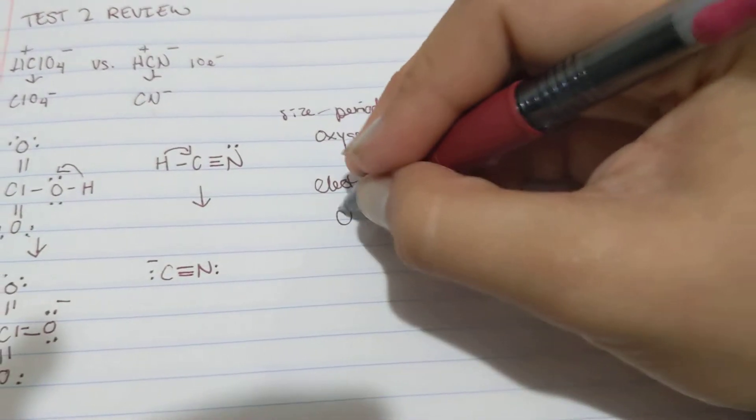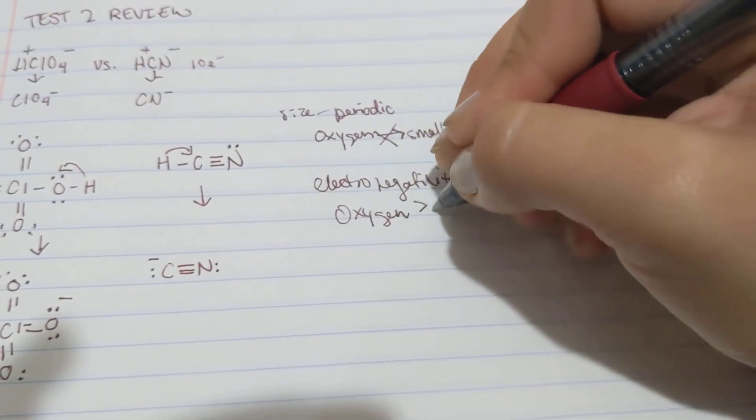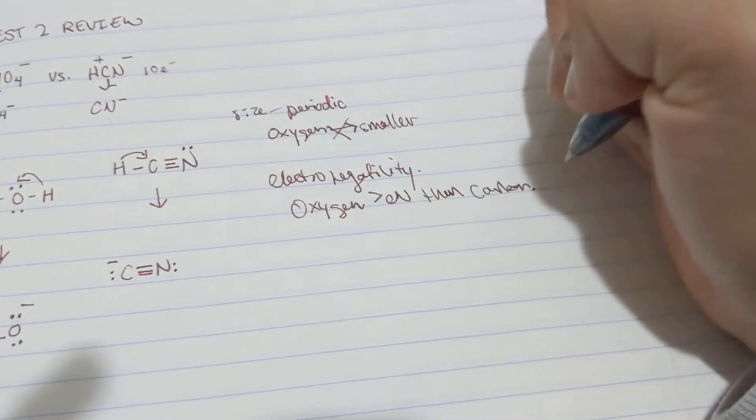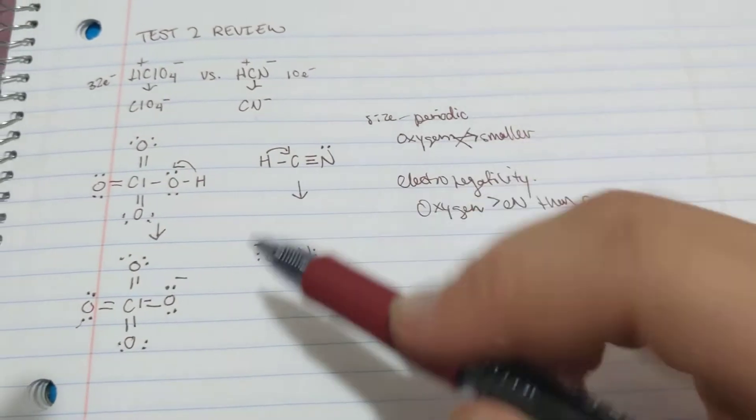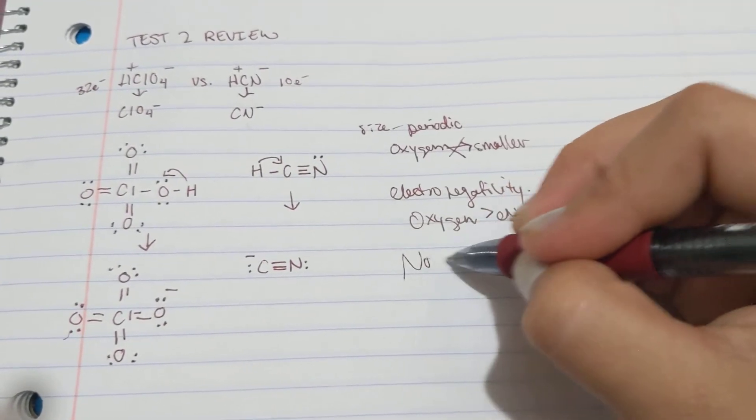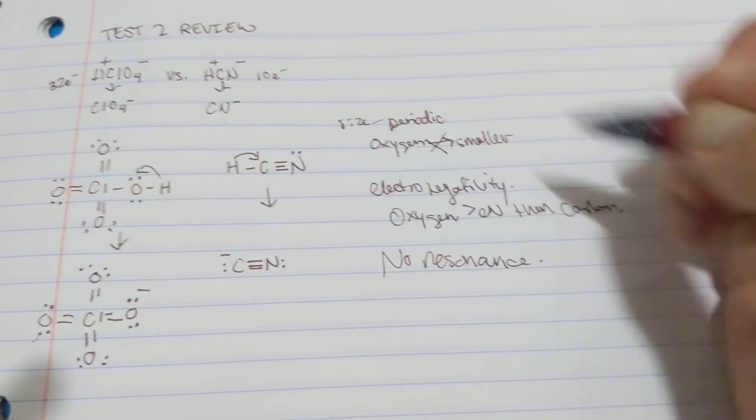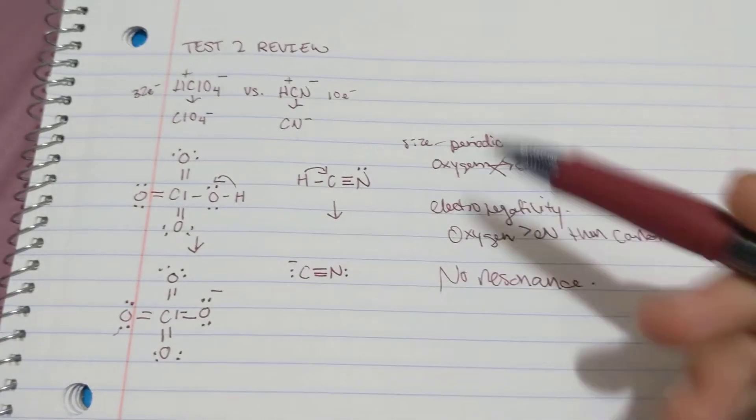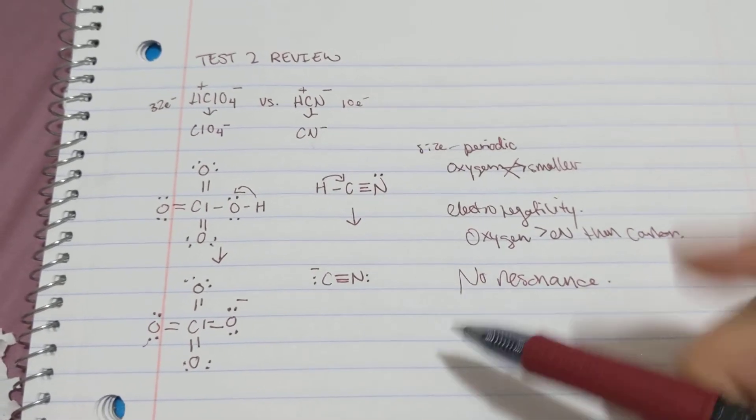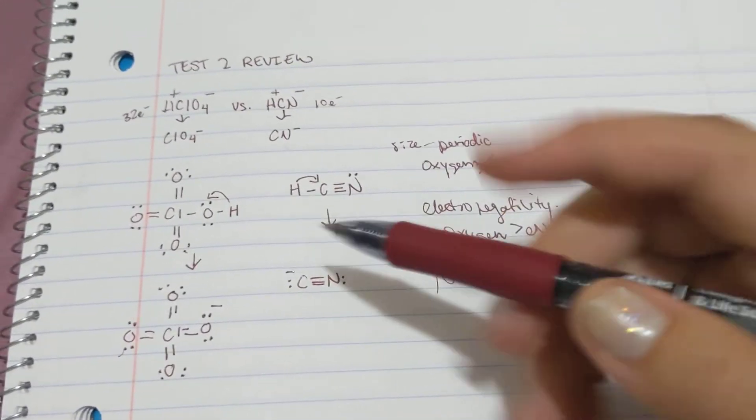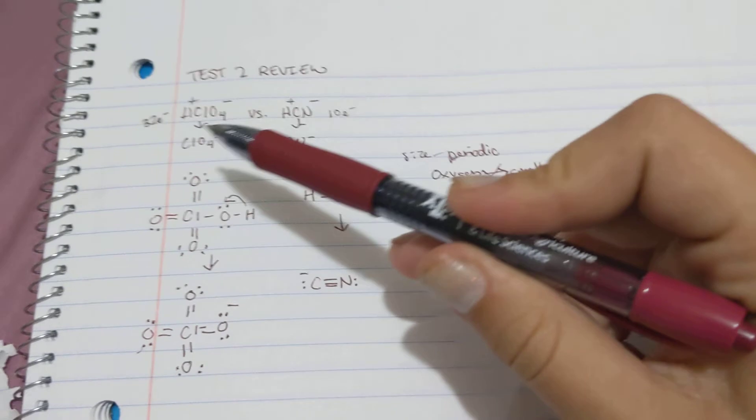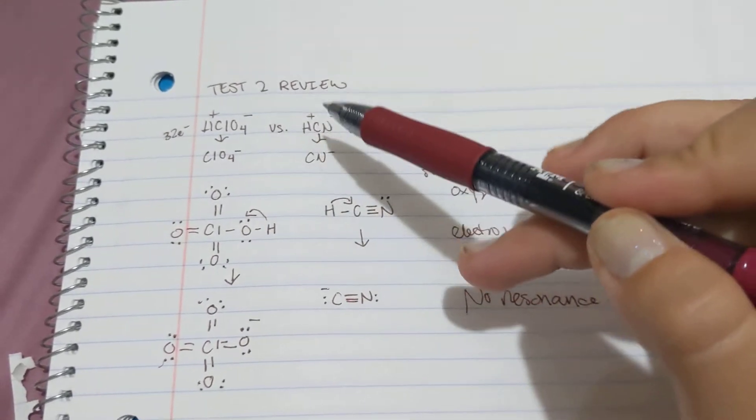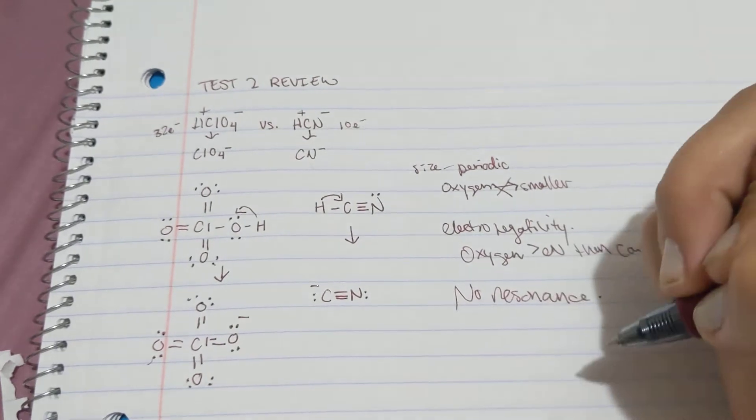So oxygen wins, has more electronegativity than carbon. And there's no resonance structures because these are not made up of three atoms. So no resonance. Therefore, the stability of oxygen in ClO4 is greater than that of carbon in CN minus. Which means that the H attached to HClO4 is more acidic than the H attached to HCN, because it's more stable due to the electronegativity difference.